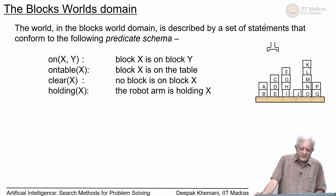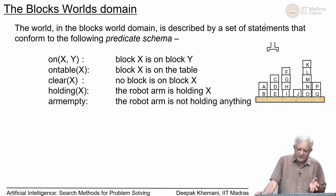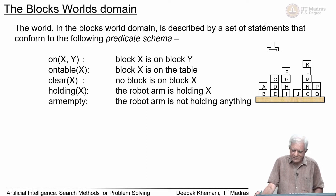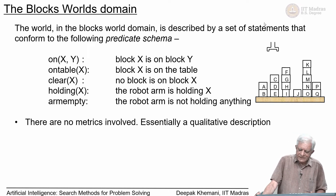There is also a predicate holding(x), which means there is a robot arm — a one-arm robot — and that robot arm is holding object x. It can only hold one object at a time; either it is holding something or the arm is empty. These predicates describe the state shown on the right. There are no metrics involved; this is a qualitative description. There is no mention of block sizes — we assume they are all of the same type.